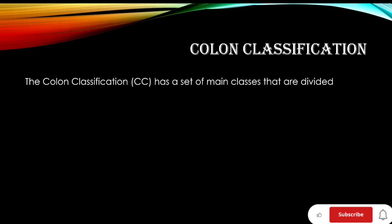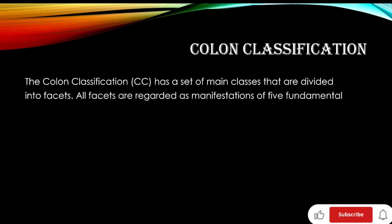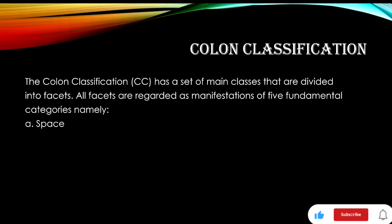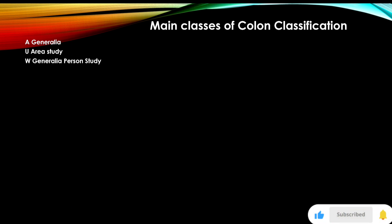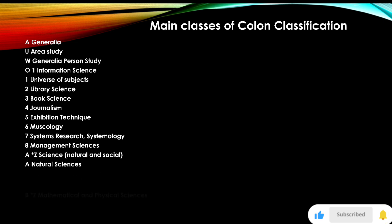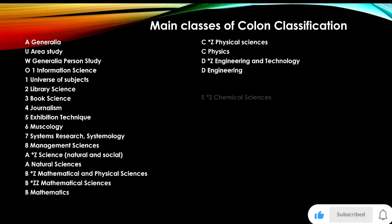The Colon Classification (CC) has a set of main classes that are divided into facets. All facets are regarded as manifestations of five fundamental categories: A — Space; B — Energy; C — Matter; D — Personality; and Time. Main classes of Colon Classification include: A — Generalia; U — Area Study; W — Personal Study; and further classes as listed on screen.